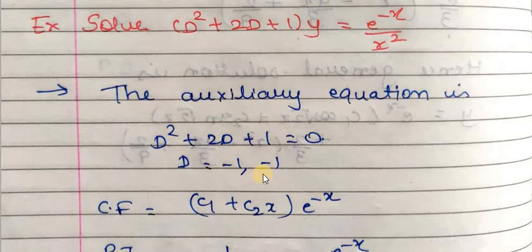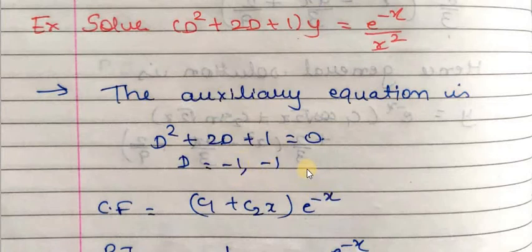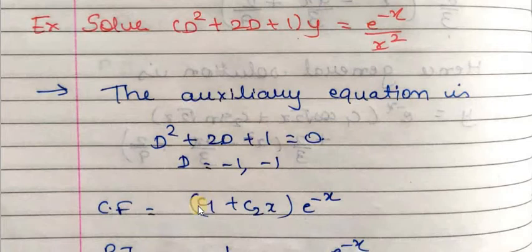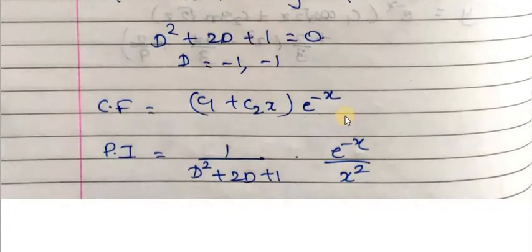We have two repeated factors (D+1), so equating to zero gives D = -1 and D = -1. Since we have repeated values of D, namely -1 and -1, CF will be e raised to -x and x·e raised to -x. Taking e raised to -x common, CF = (c₁ + c₂x)·e raised to -x. Now we find PI.